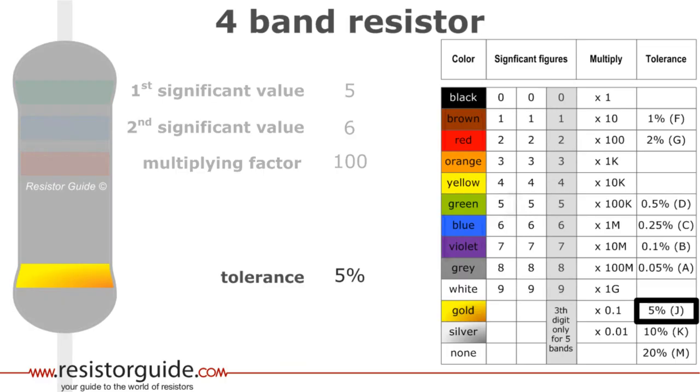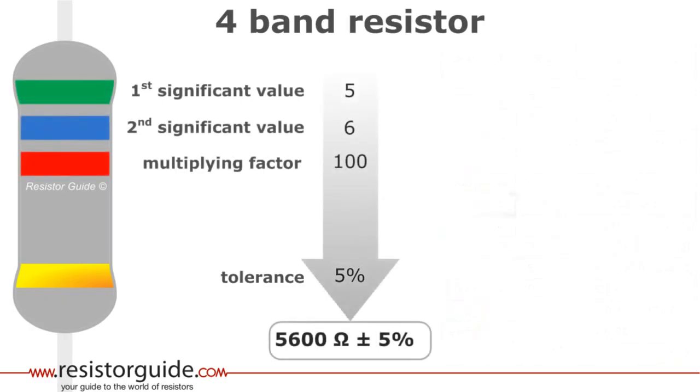The fourth band represents the tolerance and gold means a tolerance value of 5%. The resistor has a value of 56 times 100 or 5,600 ohms with a tolerance of 5%. We know that the green band was the first band and not the golden one. The increased space between the third and fourth band indicates the reading direction. Furthermore, the first band cannot have a golden color and therefore the green band must be the first band.